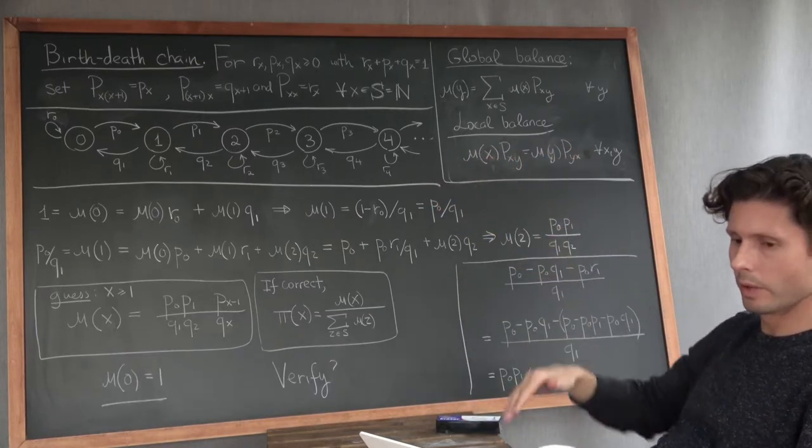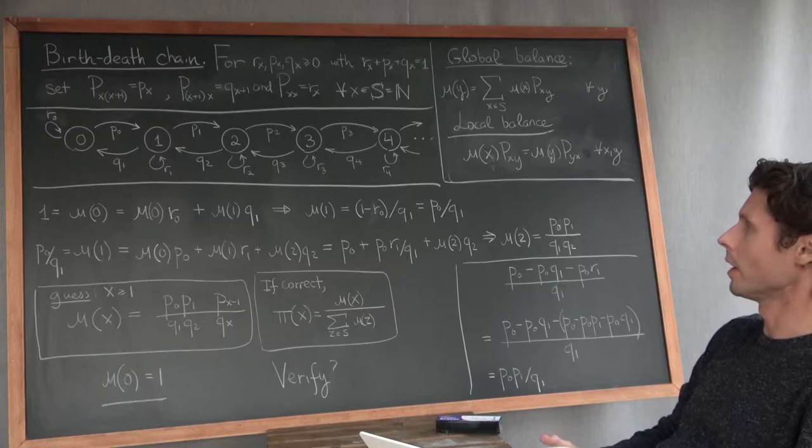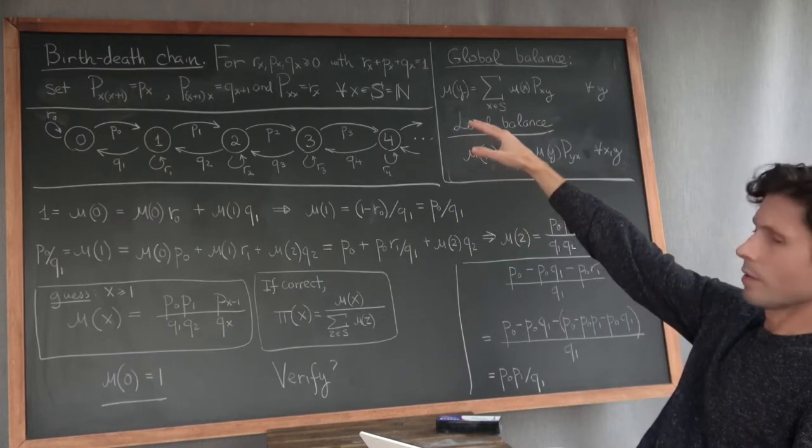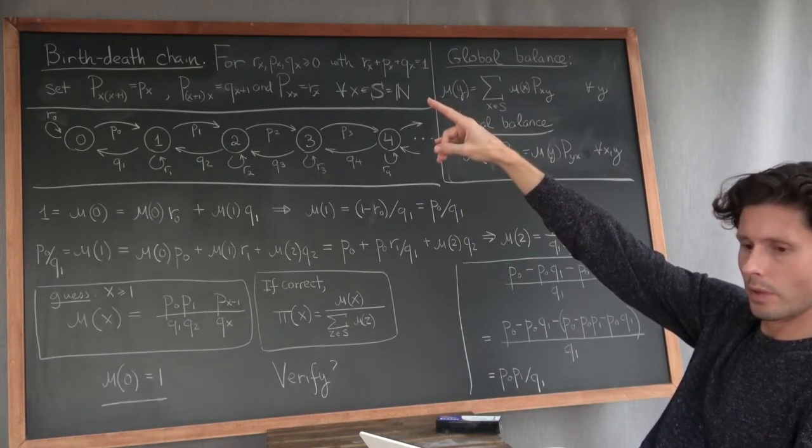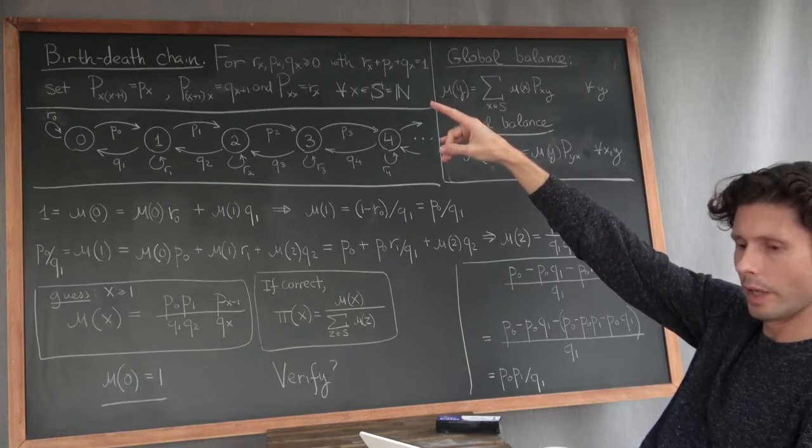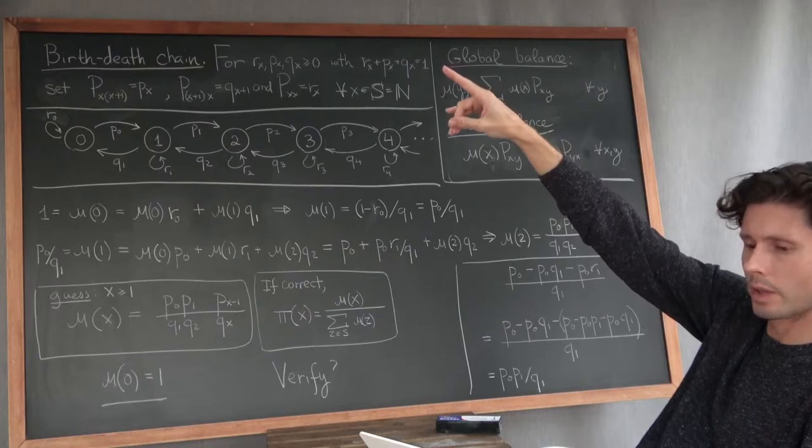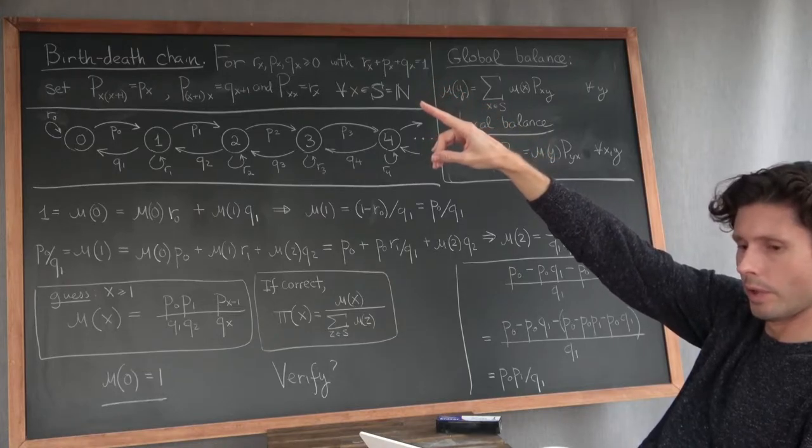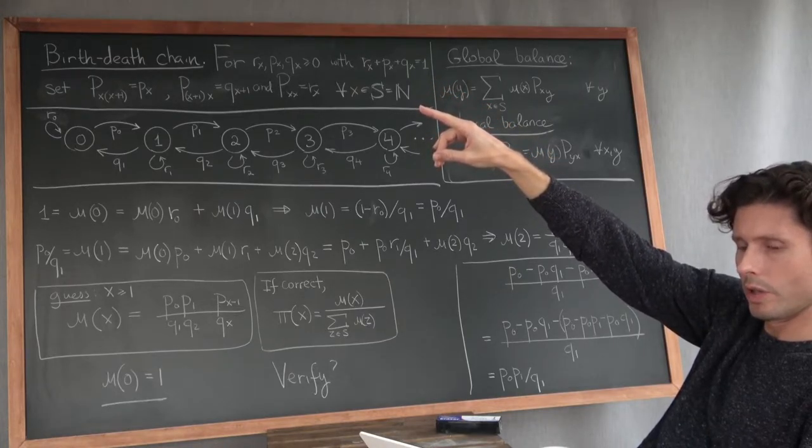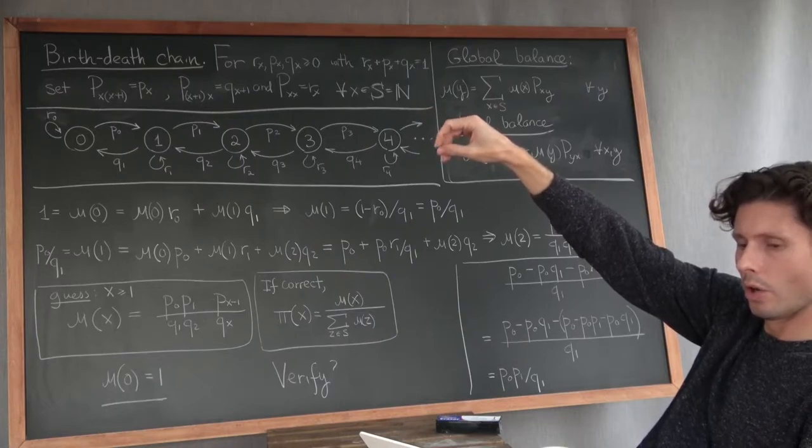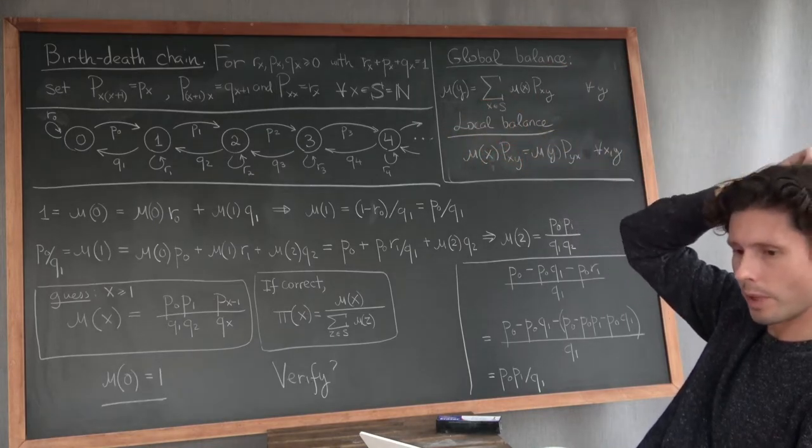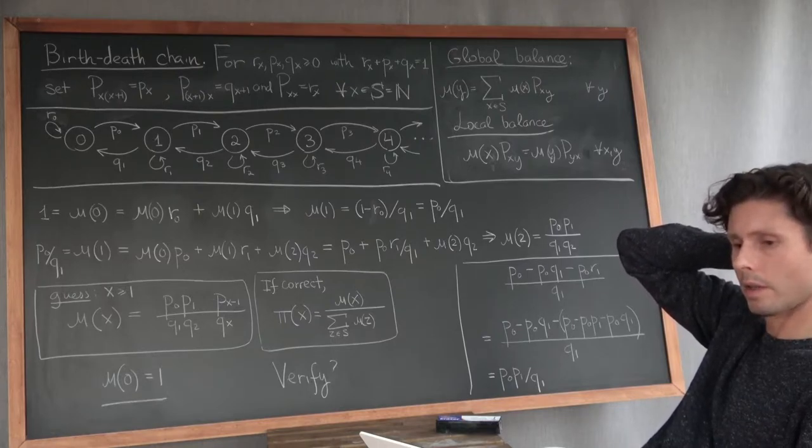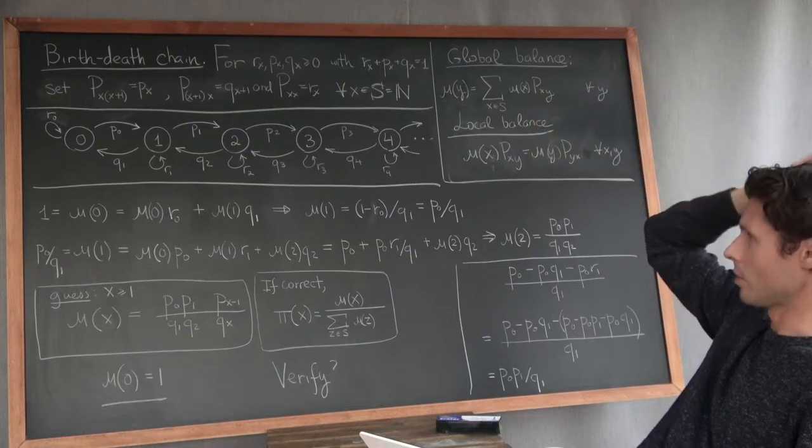It can go up, it can go down, depending on your transition probabilities. Suppose you're given this description for the one-state transition probabilities: you get these three numbers, Rx, Px, Qx, and they're all non-negative and they sum to one. If you're at state x, you can go to state x plus one with probability Px. You go from x plus one down to x with probability Qx plus one. And then you stay at state x with probability Rx. That's true for all states in the natural numbers.